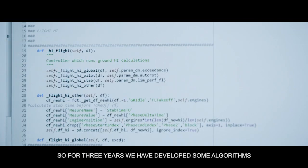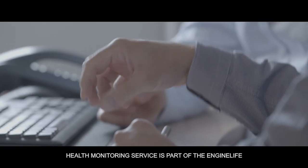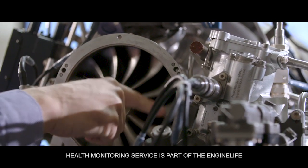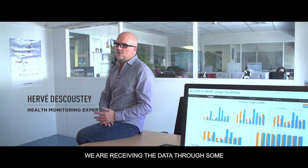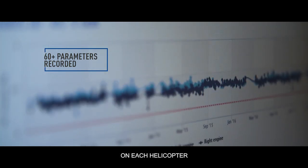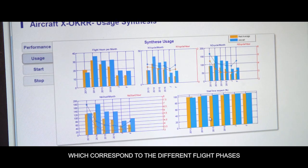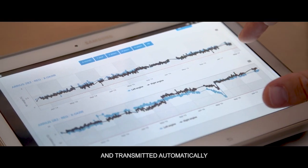For three years we have developed algorithms to track the engine parameters. Health monitoring service is part of the engine life service range. We are receiving the data on an electronic recorder. We record up to 64 parameters on each helicopter which correspond to the different flight phases. All this data is collected and transmitted automatically.